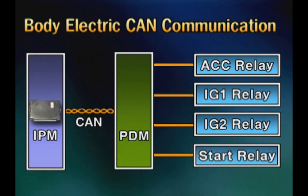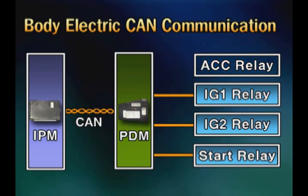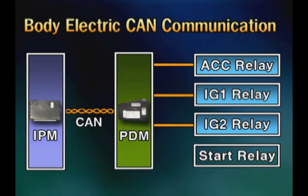The power distribution module receives information relating to the button start and decides whether to change the power supply or control the start relay. It is installed at the junction box of the engine room.